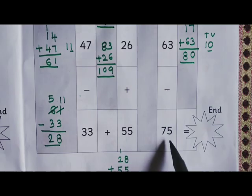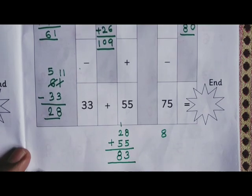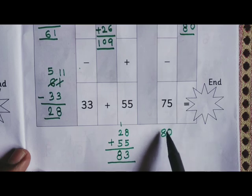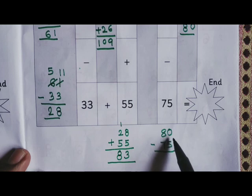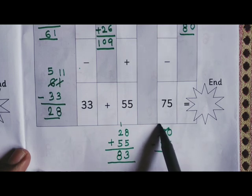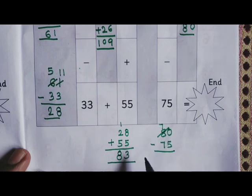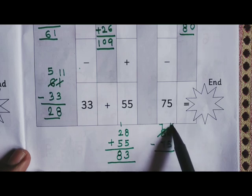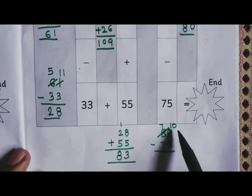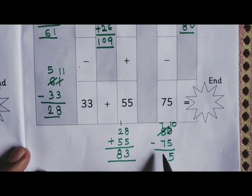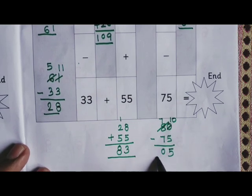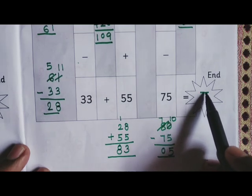80 minus 75. 0 minus 5 we can't do so we'll borrow from the tens place. If you borrow 1, 10 here, seven tens will be left here. Then it is 10 plus 0 is 10 units. 10 minus 5 is 5 and 7 minus 7 is 0, so the end answer is 5.